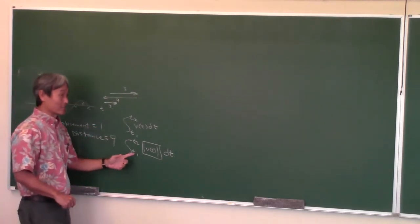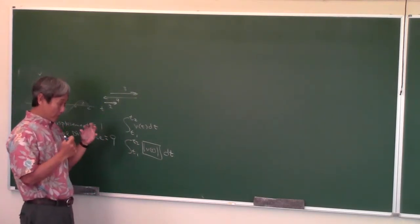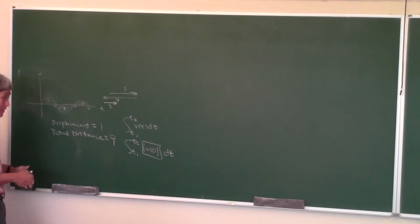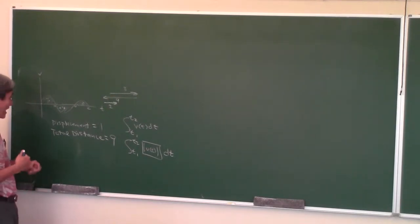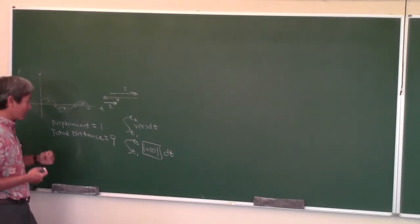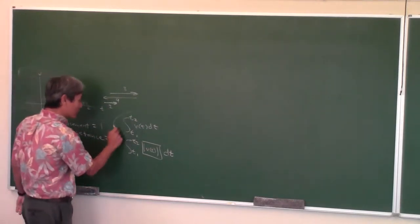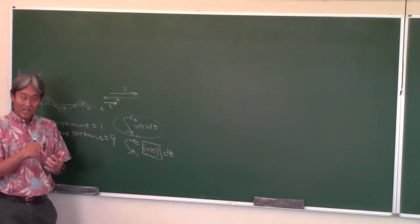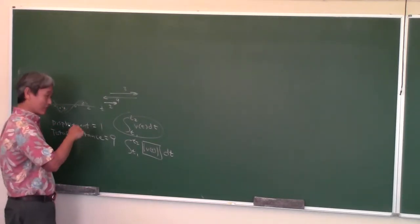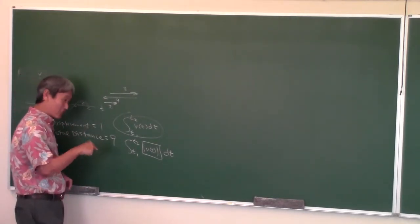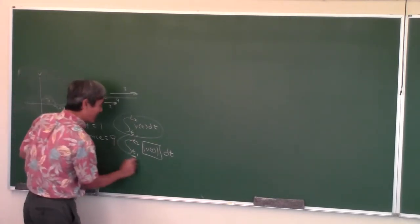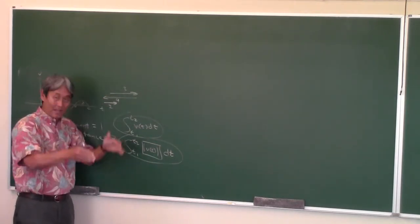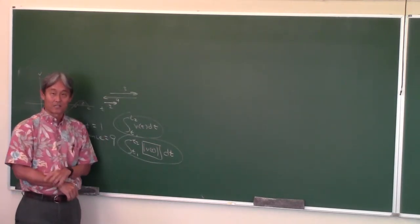This is a big difference. On the AP exam you've got to read carefully. If they ask for the displacement of the particle, you integrate the velocity. If they ask for the total distance traveled, you integrate the absolute value of the velocity. Those are two different things.